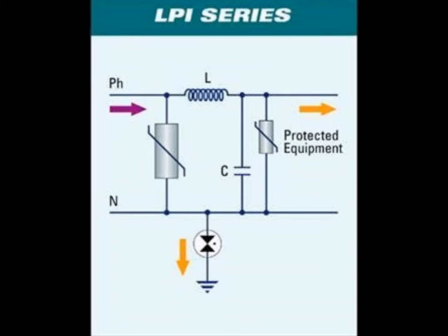Shunt protection is the simplest form of protection that can be installed and involves connecting an SPD so that it shunts across the phase and neutral terminals.